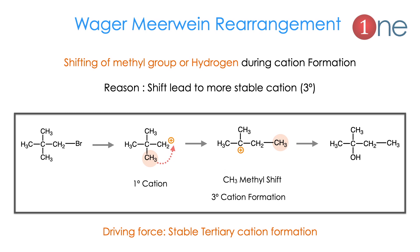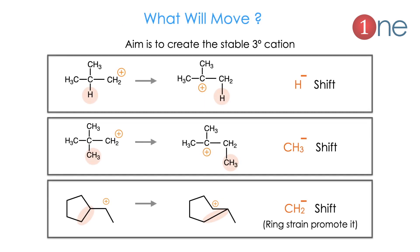The driving force for the reaction is the stable tertiary cation. Which group will migrate? There are three possibilities. First is a hydride shift — hydrogen shifts from a primary cation to form a tertiary cation. Second, a methyl shift — the methyl group shifts and converts primary to tertiary. Third, a methylene shift — here a secondary cation is formed but ring strain causes the ring to switch and form the same secondary cation without ring strain. So: hydride shift, methyl shift, and methylene shift.